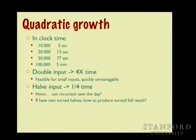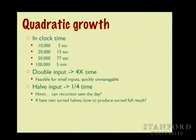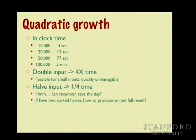Some performance numbers: 10,000 elements took about 3 seconds on my machine. Doubling the input roughly quadrupled the time, as expected for O(n²). By the time you reach 100,000 elements, selection sort takes several minutes — noticeably slow. If you're sorting data of sufficiently large magnitude, a quadratic sort like insertion or selection sort probably won't cut it.